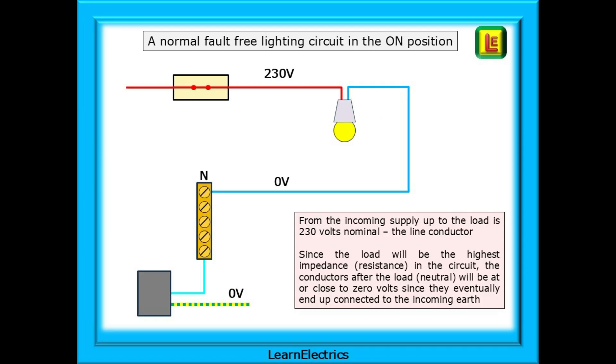We should begin with the normal, fault-free circuit in the on state, the switch in the closed position. From the incoming supply up to the load is 230 volts nominal, the line conductor. Since the load would be the highest impedance or resistance in the circuit, the conductors after the load, the neutral, would be at or close to 0 volts since they eventually end up connected to the incoming earth.